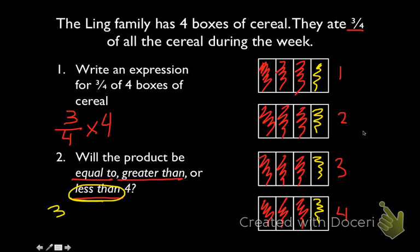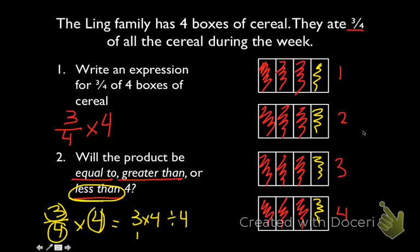We can also verify by solving: 3 fourths times 4 is the same as 3 times 4 divided by 4. Taking the numerator, multiplying it by the whole number, and then dividing by the denominator: 3 times 4 is 12, divided by 4 is 3. So the product is less than 4. Even without solving, we can see that when we take a whole number and multiply it by a fraction less than 1, the product is going to be less than the factor we're multiplying the fraction by.